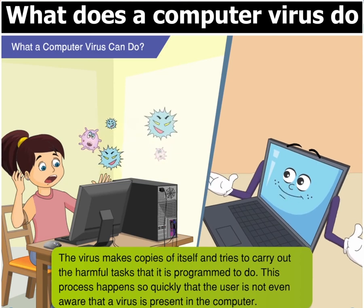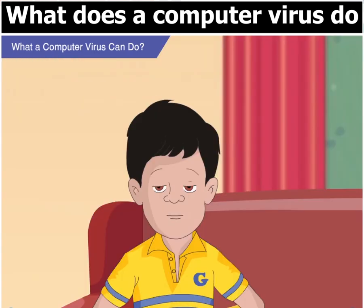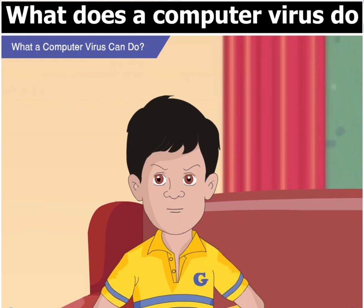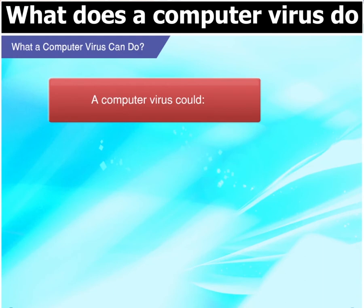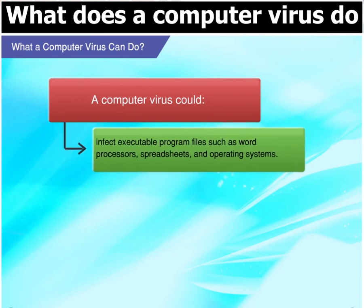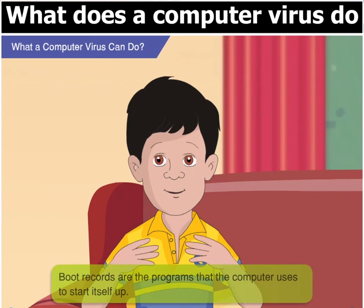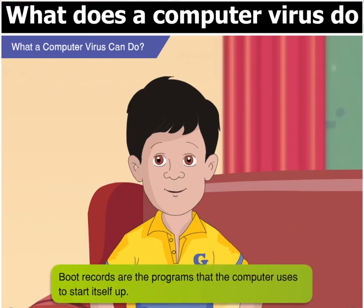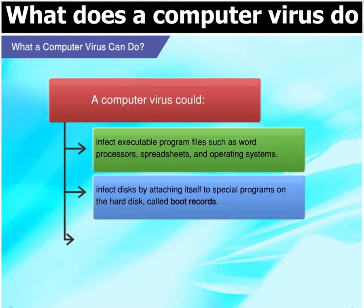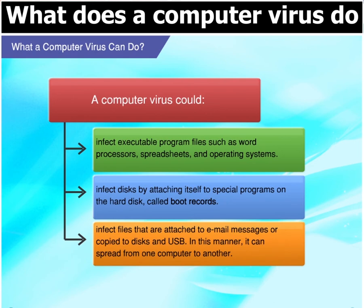And you come to know only after your computer has been harmed enough. What kind of damage can a virus do on a computer? Lots of different kinds, Goggle. A computer virus can infect executable program files such as word processors, spreadsheets, and even operating systems. It can also infect disks by attaching itself to special programs on the hard disk called boot records. A virus may have infected files that are attached to email messages or those that have been copied to disks and USB. In this manner, it can spread from one computer to another.